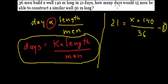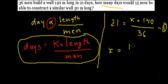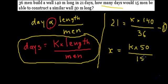In the second case, we have to find the number of days required to build a wall which is 50 meters long and the men at work are 15. So let's assume the number of days as x. So x will be k multiplied by the length of the wall, which is 50, divided by the number of men, which is 15. This is equation number 2.